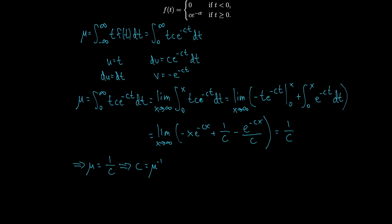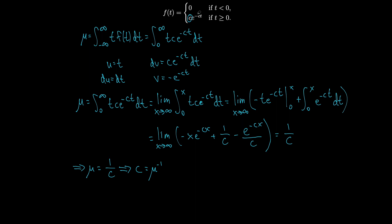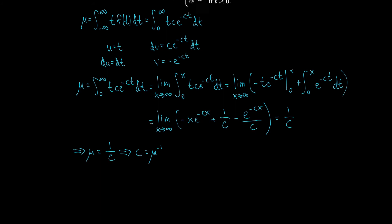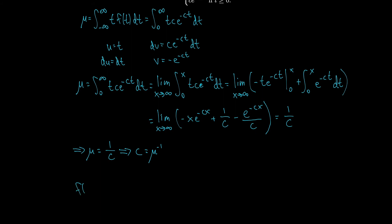So instead of writing c·e^(−ct), we can replace c with the actual mean of the function. We can say f of t equals 0 if t is negative, and f of t equals mu^(−1) times e^(−t/mu) if t is positive.